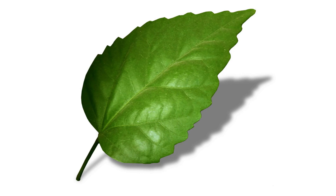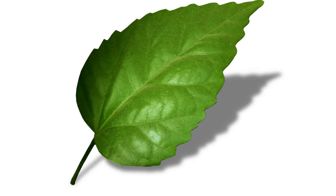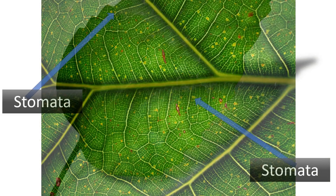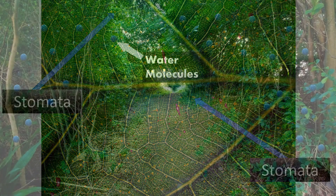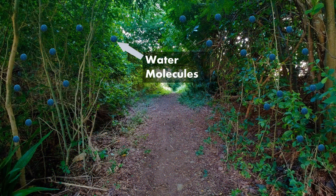The first of these reasons has to do with the structure of the leaf. Leaves contain numerous tiny pore-like structures called stomata, the majority of which are found on the underside of a leaf. A microscope is usually required to see these structures.